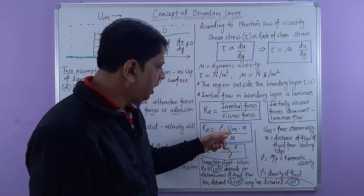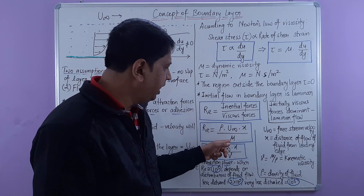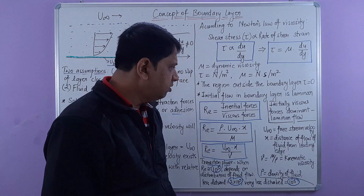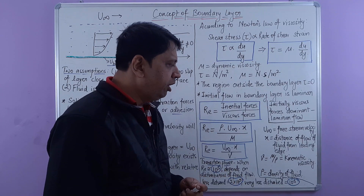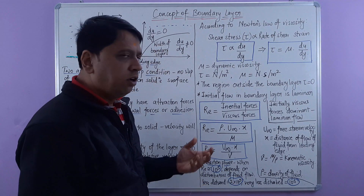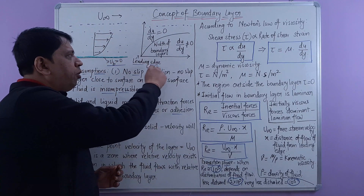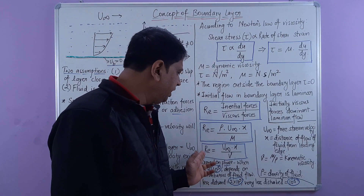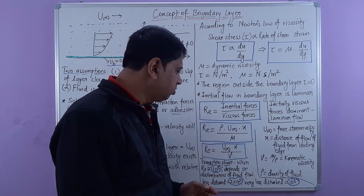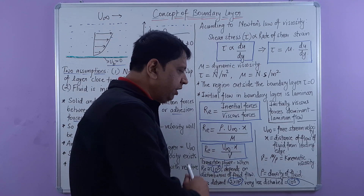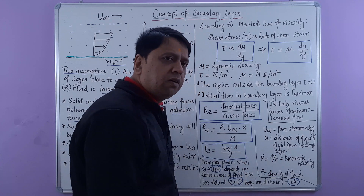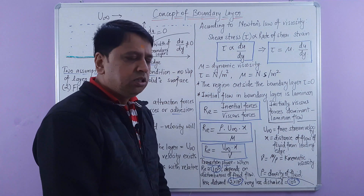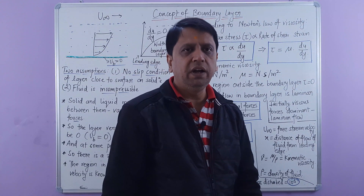The Reynolds number can also be written in equation form as: Re = ρ × u∞ × x / μ, where ρ is the density of the fluid, u∞ is the free streamline velocity, and x is the distance of flow from the leading edge. The leading edge is the point where the boundary layer starts. This equation can also be written as Re = u∞ × x / ν, where ν is the kinematic viscosity, equal to μ/ρ.